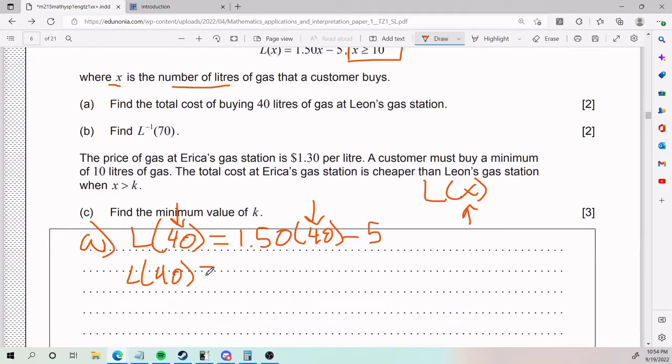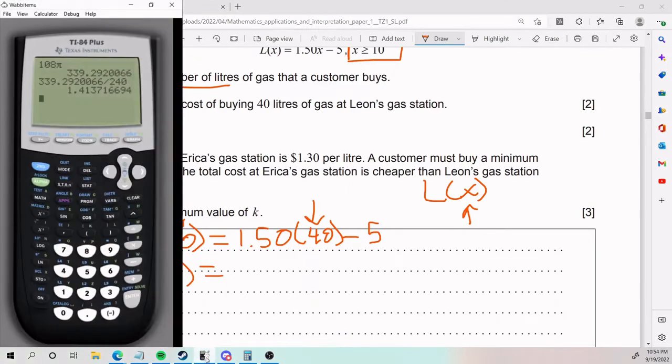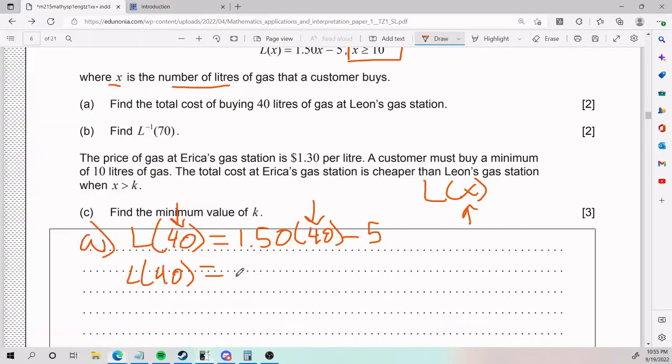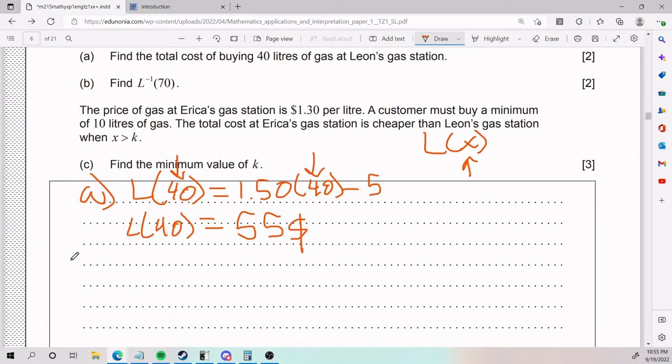So L(40) is 1.50 times 40, which is 60, minus 5, equals 55. So total cost of buying 40 liters of gas at Leon's gas station is $55. Don't forget the units. That is part A.